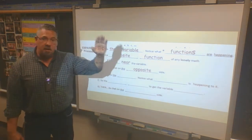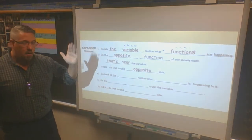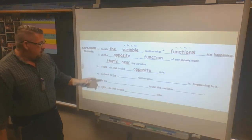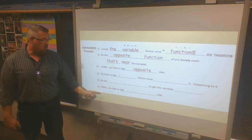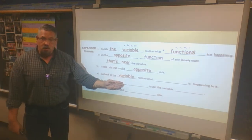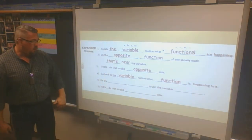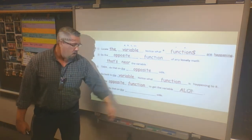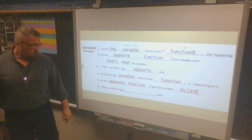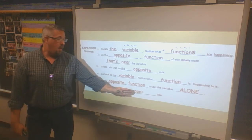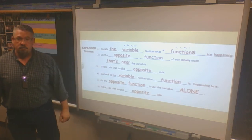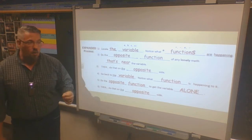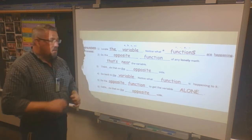Once I know what it is, I do the opposite function on the opposite side, cross it out, and rewrite my math problem. Then that takes me back through what we've done all along: go to the variable, notice what function is happening to it, do the opposite function to get the variable alone, and do that on the opposite side. Feel free to pause and fill out your paper.